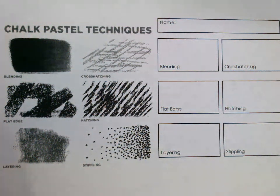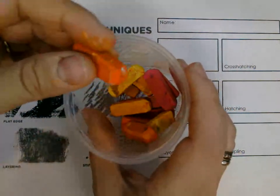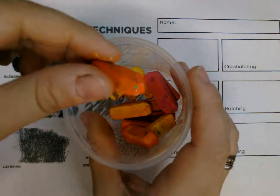A little bit about chalk pastels is that they are a powdered pigment and binder, so they kind of feel like chalk. They're a little bit messy, so we try to only use like one at a time.